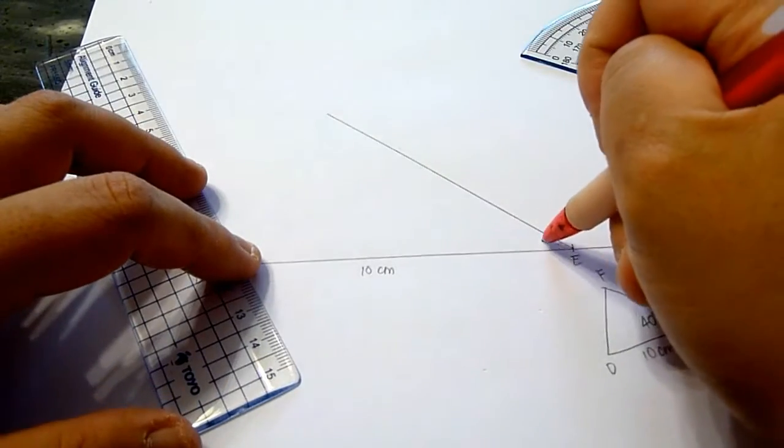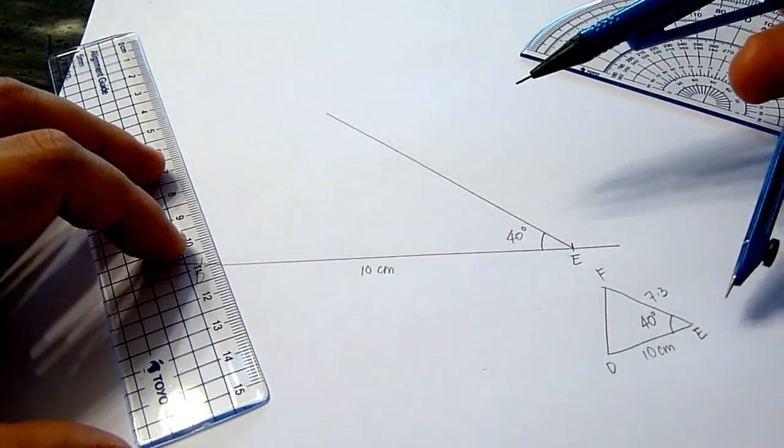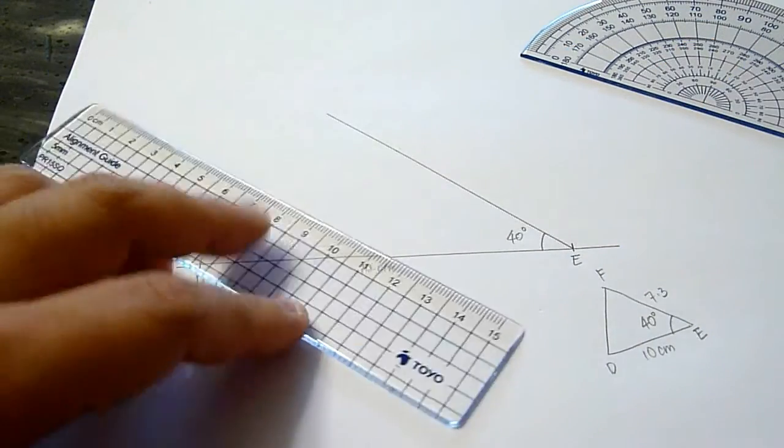Here, it measures 40 degrees. Now, we are told that EF is 7.3 cm.